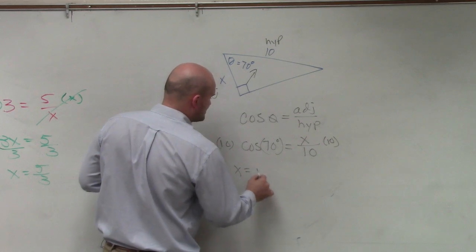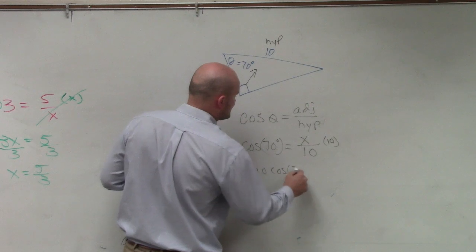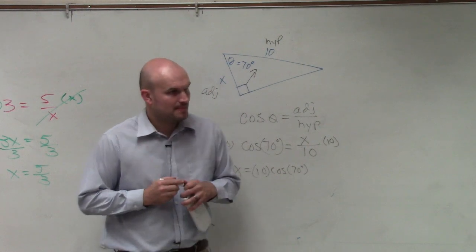So therefore, x equals 10 times the cosine of 70 degrees. Everybody agree with me?